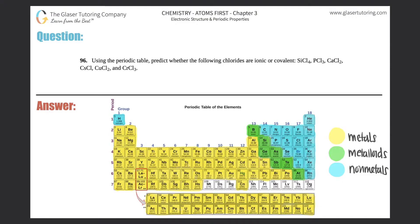Number 96, using the periodic table, predict whether the following chlorides are ionic or covalent. And then we have SiCl4, PCl3, CaCl2, CsCl, CuCl2, and CrCl3.